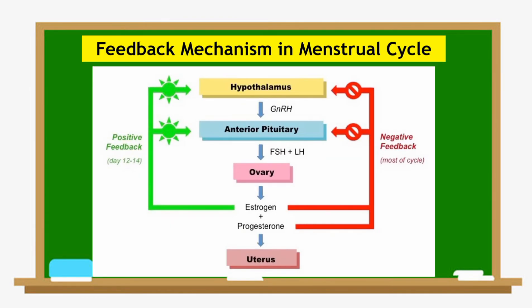This is an example of a negative feedback mechanism in the menstrual cycle. Follicle-stimulating hormone stimulates the ovaries to release estrogen. High levels of estrogen then prevent further production of follicle-stimulating hormone. Estrogen also stimulates the release of luteinizing hormone from the pituitary gland, which in turn controls the production of progesterone. High levels of progesterone will inhibit or stop the further release of luteinizing hormone.